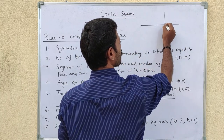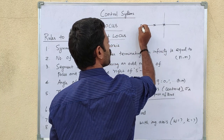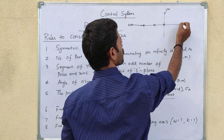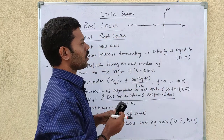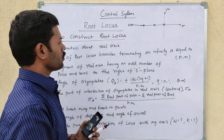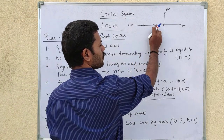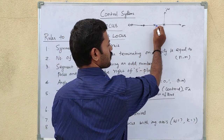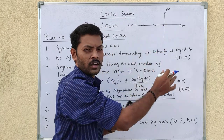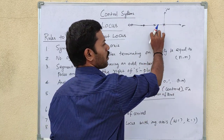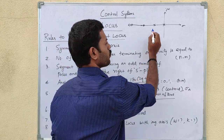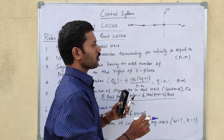Here are three poles and two zeros plotted on the S-plane, with the J-omega axis and real axis shown. For point number 3, we show the segment of the root locus. The right side of the first pole has one pole, which is an odd number, so that segment is on the root locus.